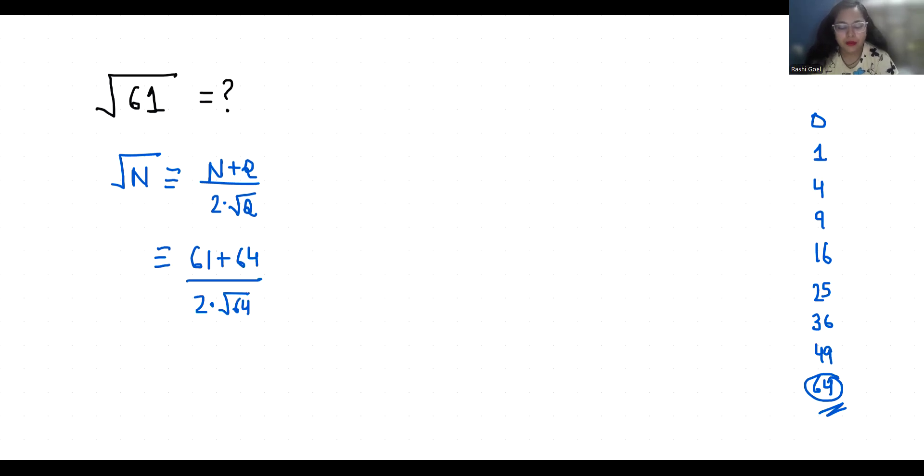Now approximately equals to 61 plus 64 is 125, 2 times square root of 64 is 8. This approximately equals to 125 by 16. Now we are going to divide.